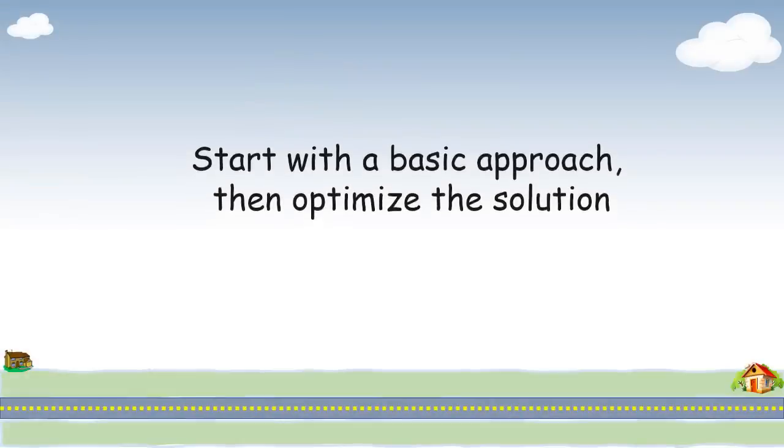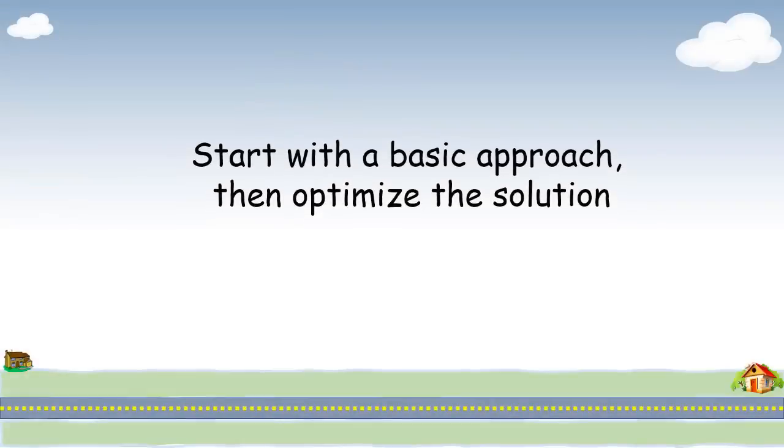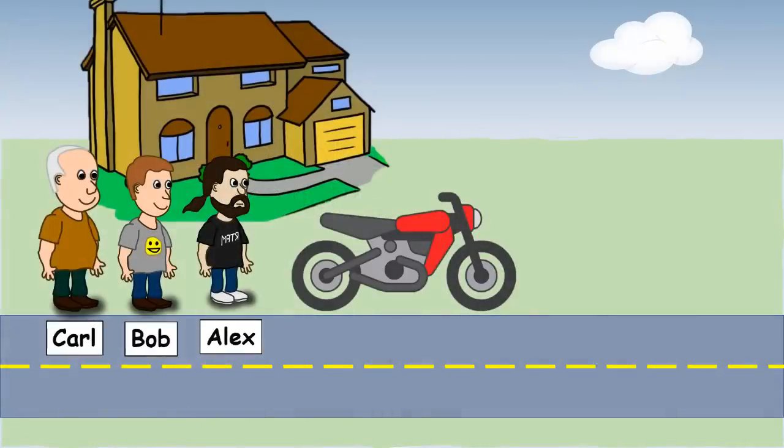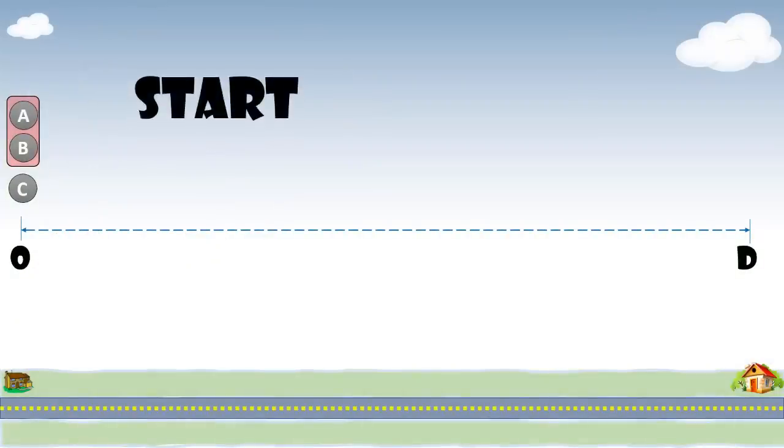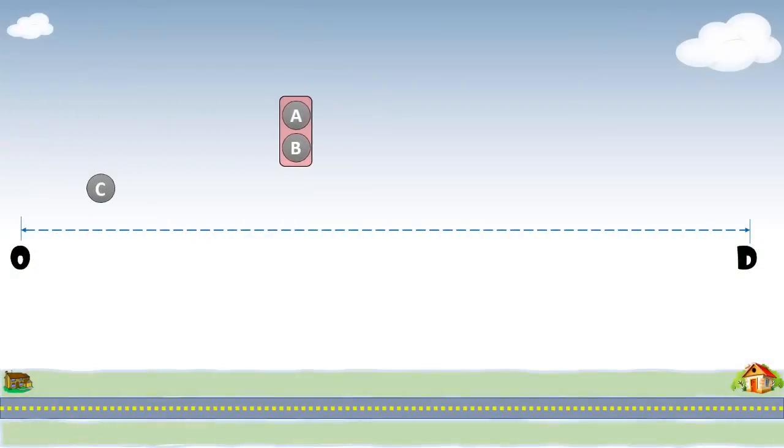Always start with a basic approach and then optimize the solution step by step. So, a basic approach would look like this. Alex and Bob start on motorbike and Karl starts walking. Karl keeps walking until Alex drops Bob at the destination and comes back to pick him on the bike. Then Alex and Karl cover the remaining distance on bike.